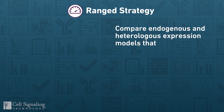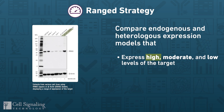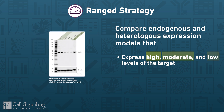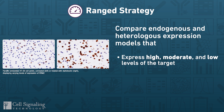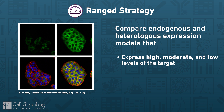In the ranged strategy, we pick models that express high, moderate, and low levels of the target. These may include treatments with agonists, antagonists, or siRNA to increase or decrease target expression. For many targets, a ranged strategy may be more biologically relevant than an all-or-nothing binary strategy.